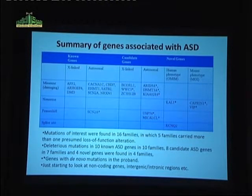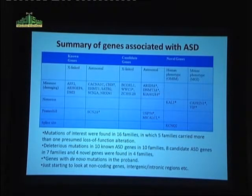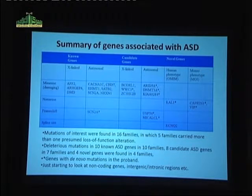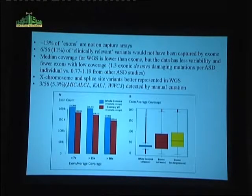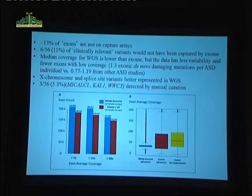This is a preliminary look. We just started to look at the intergenic intronic regions. The computer algorithms that scan for mutations in these long stretches of DNA are still quite rudimentary, so we've been developing these. But the yield by first-pass analysis was quite high — roughly 50% of families where we could find something of interest.